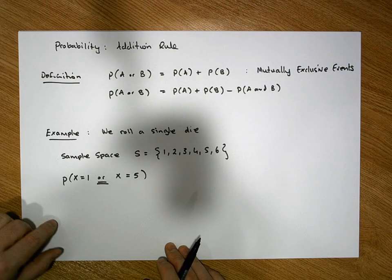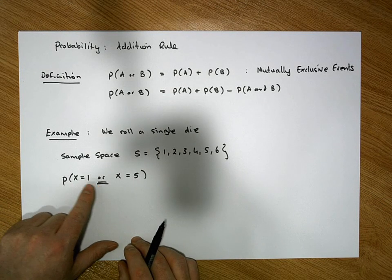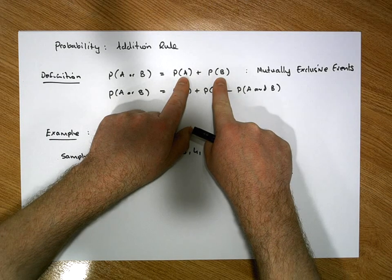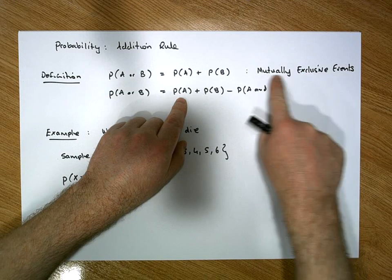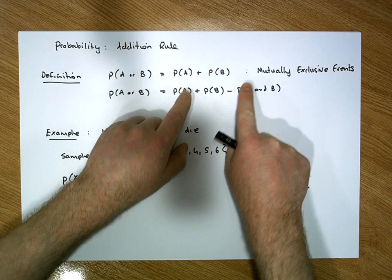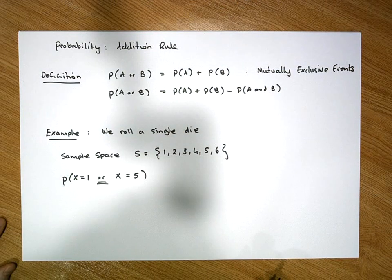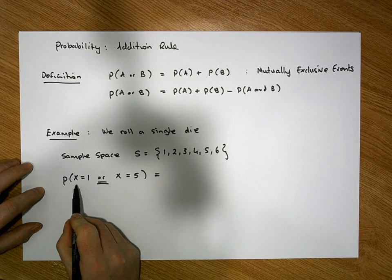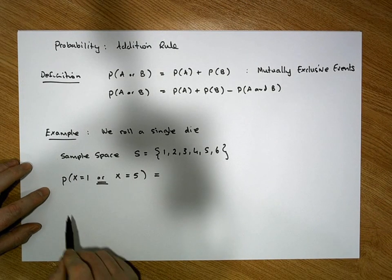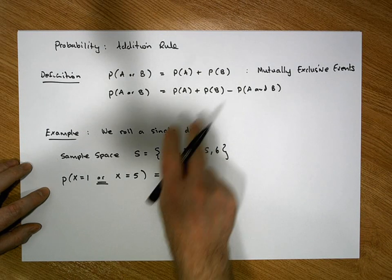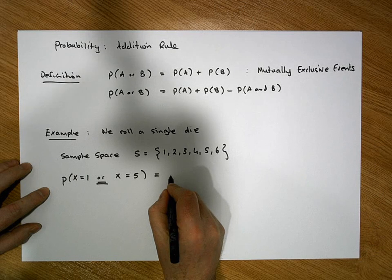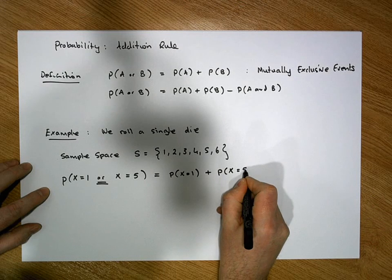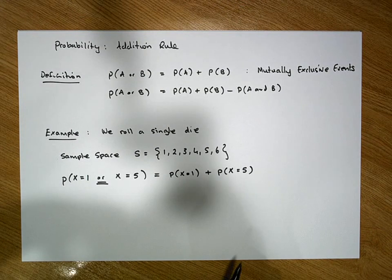The addition rule says: take the two events — the first event listed to the left of the 'or' and the second event to the right — and calculate their individual probabilities. Whether the events are mutually exclusive or not, we always calculate individual probabilities first. So the probability that the outcome is one or the outcome is five is going to be at minimum equal to the sum of those individual probabilities: P(1) plus P(5).